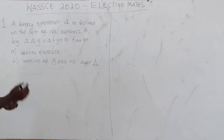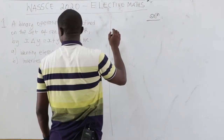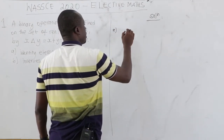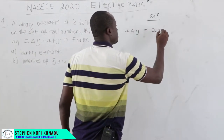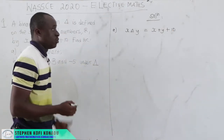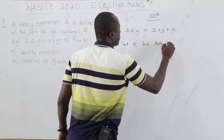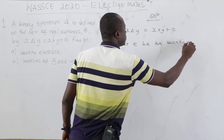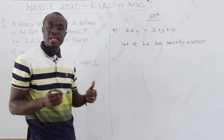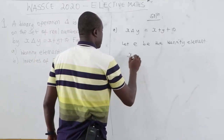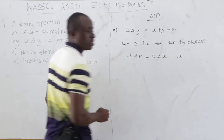The first part says we should find the identity element. We know the formula given to us: x delta y is equal to x plus y plus 10. We want to find the identity element. So let e be the identity element. We know that the identity element is commutative, so x delta e is the same as e delta x, and this is equal to x.